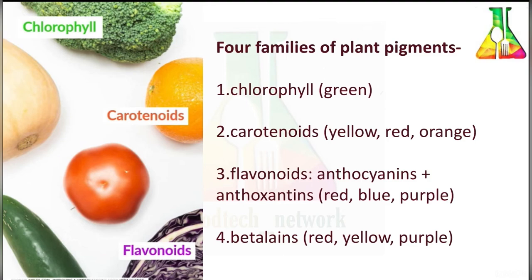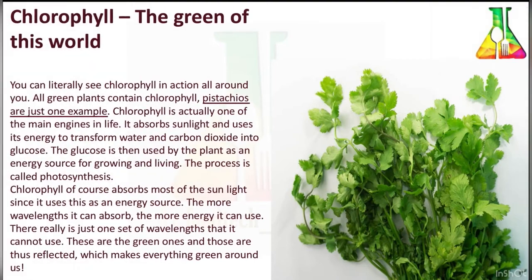Chlorophyll is a green pigment that is fat-soluble. It is involved in photosynthesis and is present in many plants, especially in leafy vegetables such as cabbage and lettuce. Chlorophylls are related to porphyrins, which is an important group of biological pigments that includes hemoglobin. Just as hemoglobin is important in the human body, chlorophyll is equally important in a plant.